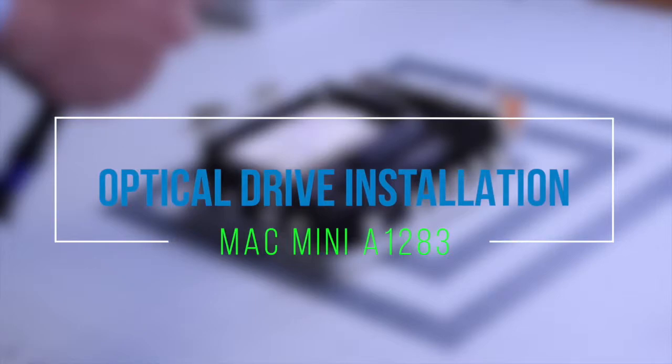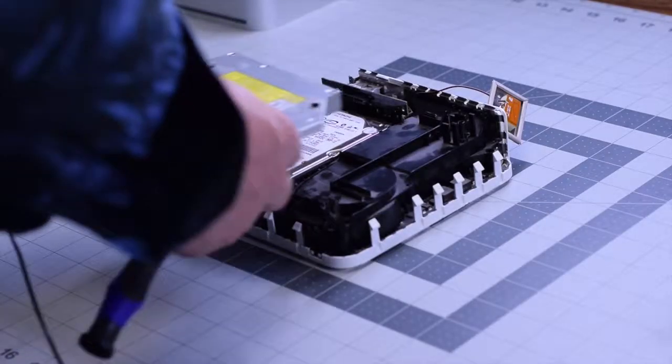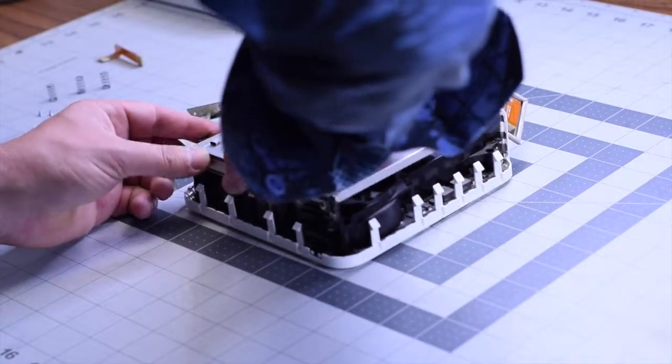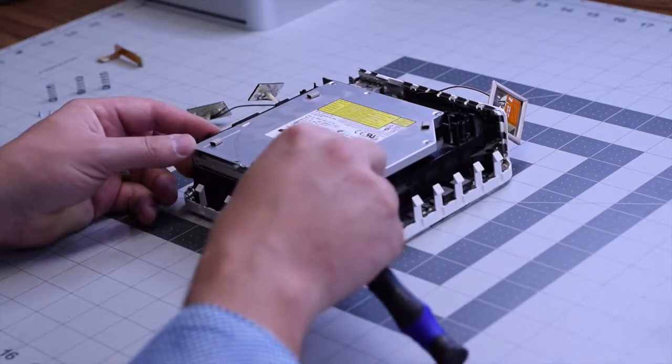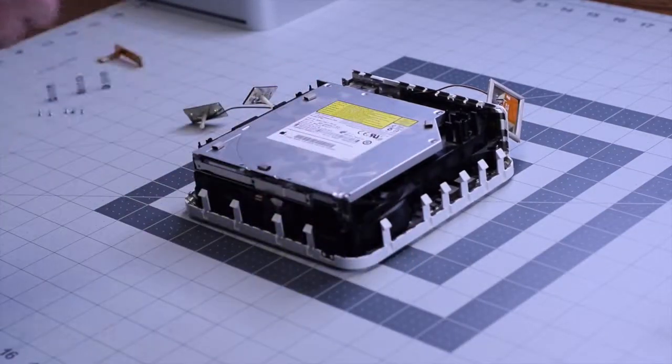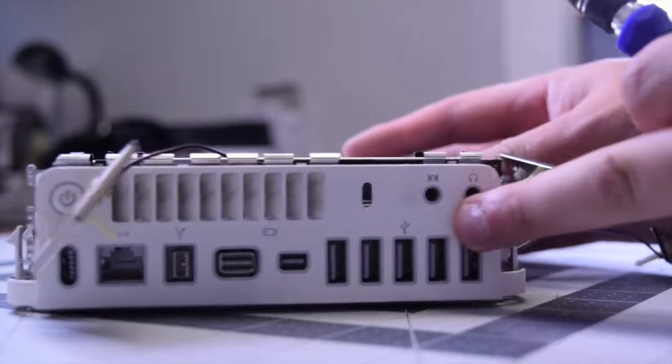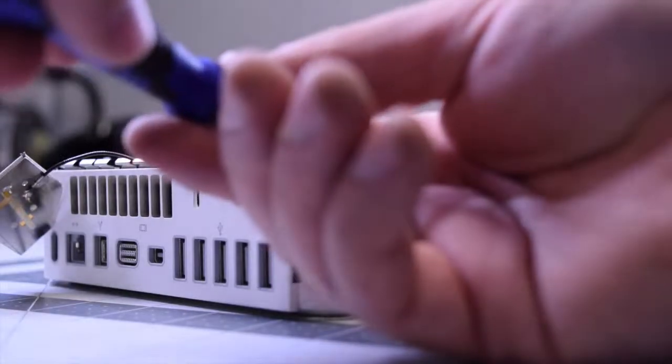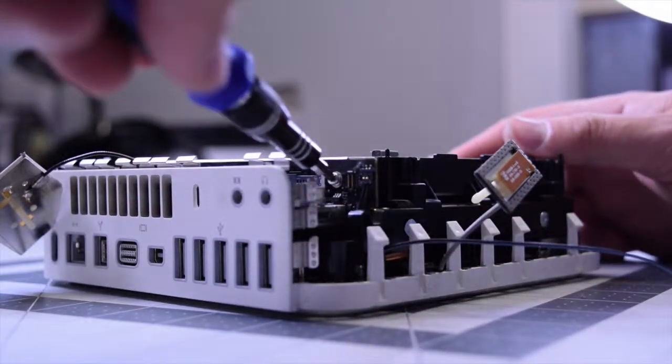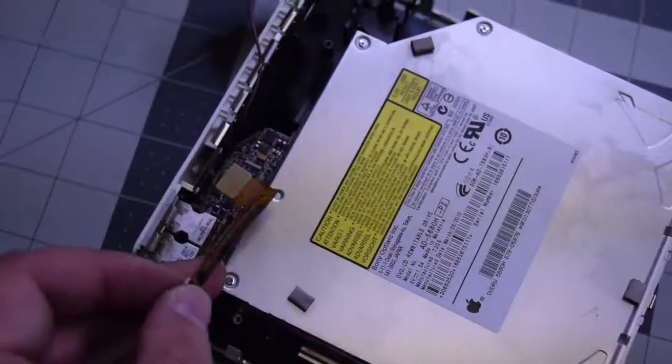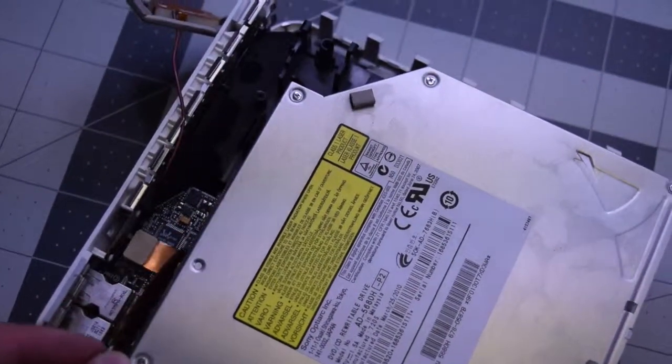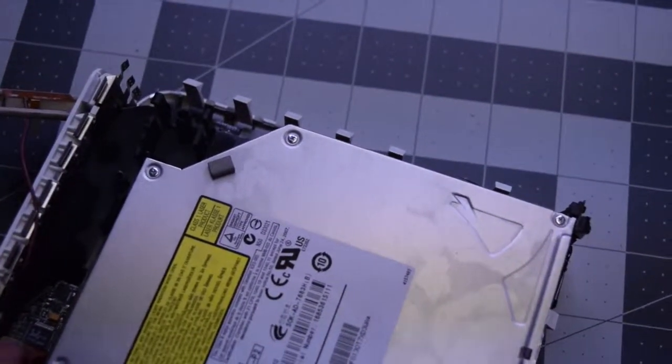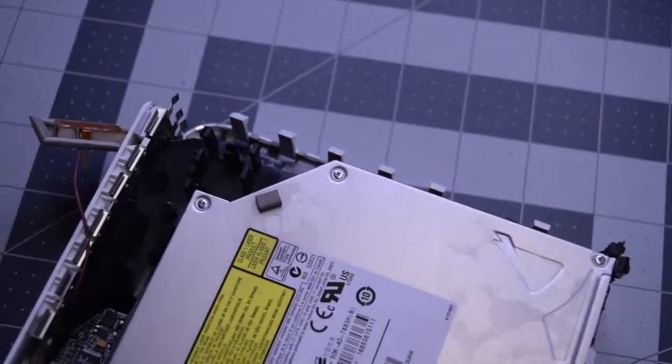Optical drive installation. Let's slide in that DVD drive into the socket. Make sure that's nice and connected. The first thing we want to do is secure that rear Phillips head screw so that the drive is nice and flush with the I.O. bridge while we work on the rest of the connections. Go ahead and plug back in that ribbon cable that connects the I.O. bridge to the DVD drive.